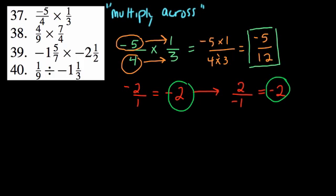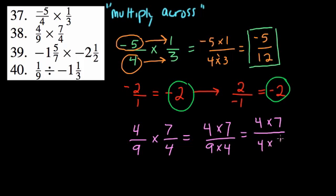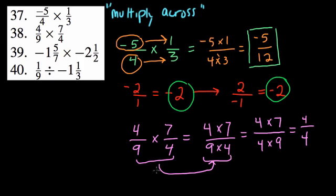In problem 38 we're also multiplying, but instead of just multiplying across let's think about the commutative property. It's true we could multiply 4 by 7 to get 28, but I'll just write 4 times 7, and we could multiply 9 times 4 to get 36. The commutative property tells us we can switch the order without changing the value, so we can have 4 times 7 over 4 times 9. Separating this fraction, what do we notice?